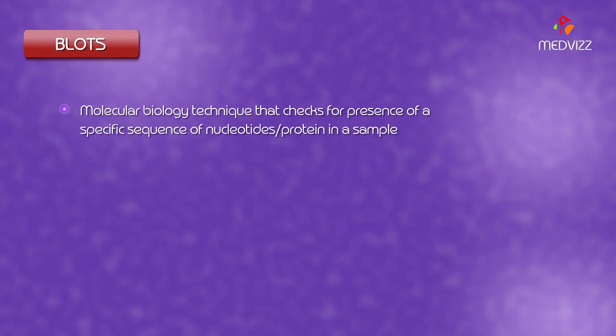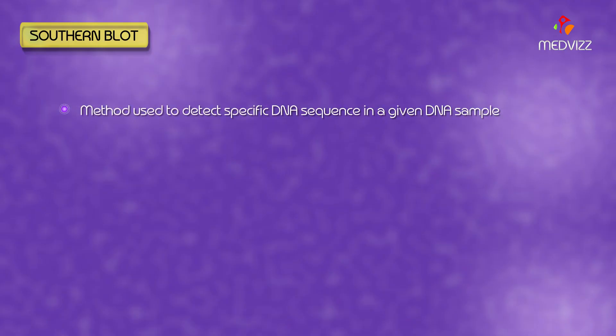A blot is a molecular biology technique that checks for the presence of a specific sequence of nucleotides or protein in a sample. Southern blot is a method used to detect a specific DNA sequence in a given DNA sample.